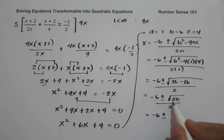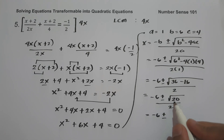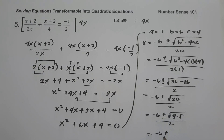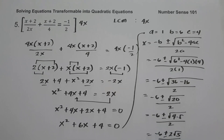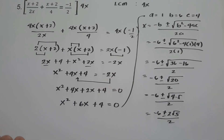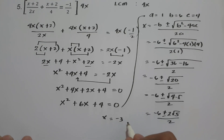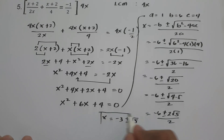Since 20 is not a perfect square, we find two factors: 4 times 5 equals 20, and 4 is a perfect square. So the square root of 20 is 2 times the square root of 5. We have negative 6 plus or minus 2 root 5, all over 2. Simplifying: negative 6 divided by 2 is negative 3, and 2 divided by 2 is 1, giving us x equals negative 3 plus or minus square root of 5. This will be our answer.